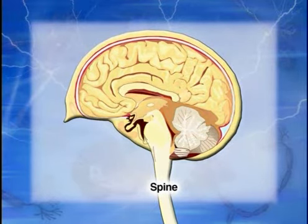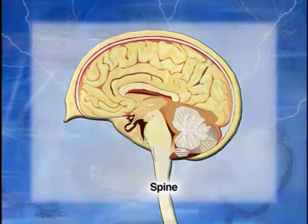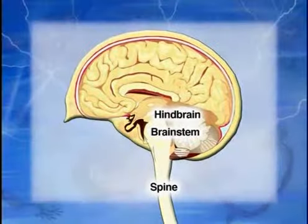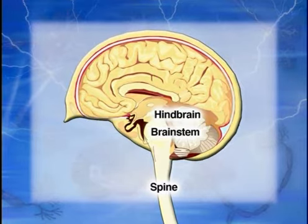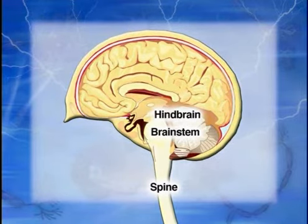Those axons carry sensory information — touch, pain, temperature — and coming from the spinal cord, projections head out to the body, telling your muscles to contract. Then moving upward, you've got the back part of the brain, the brain stem, the hind brain. For our purposes, not a very exciting part of the brain — it makes you remember to breathe, makes your heart beat on its own — not very central to understanding emotion, but brain stem, hind brain.